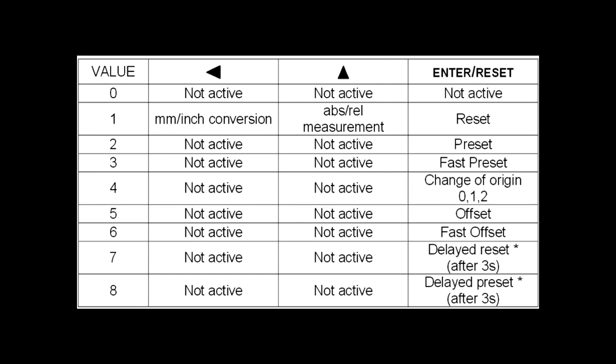There are many functions that the F7 can achieve, such as preset zero reset values, offset values for determining tooling offsets, and key delay response times. For the purpose of simplicity, we will only concentrate on the general functionality of the soft keys for this instructional video.